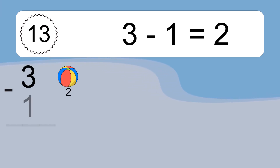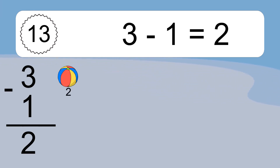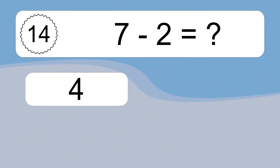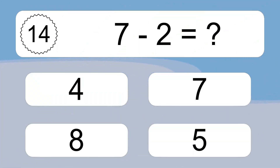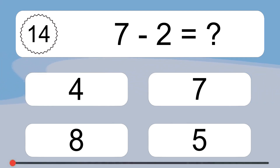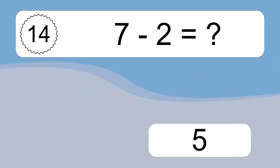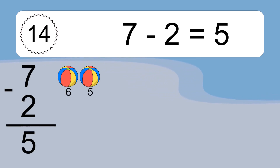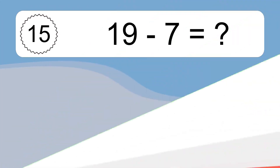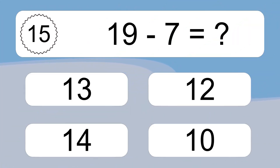3 minus 1 equals what? 3 minus 1 equals 2. Let's count it: 2. 7 minus 2 equals what? 7 minus 2 equals 5. Let's count it: 6, 5.